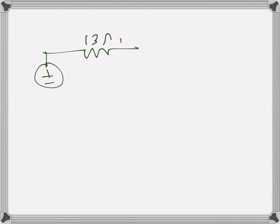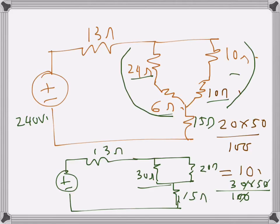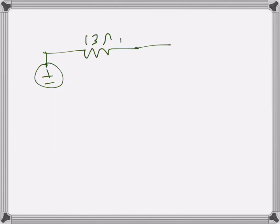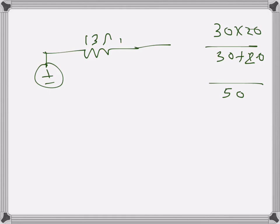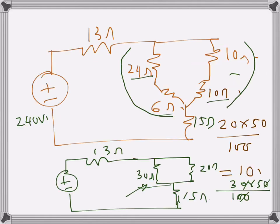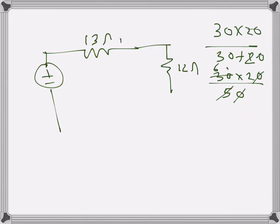The original 13 ohms is there, and I want to find the parallel equivalent of 30 and 20: 30 × 20 over 30 + 20 = 600/50 = 12 ohms. Then 6 ohms gives 12 ohms there, and I had 15 ohms in series, so 15 ohms.